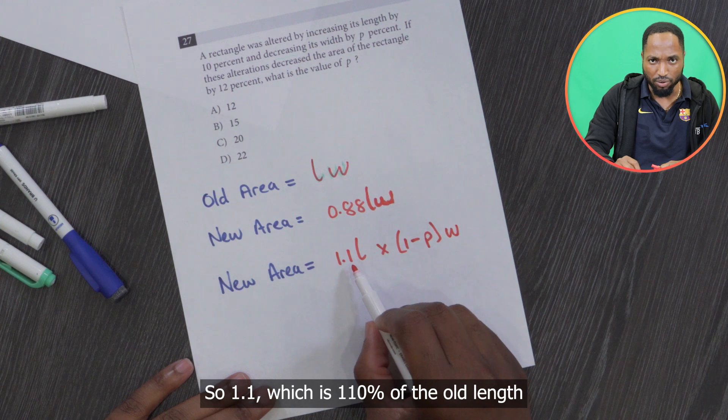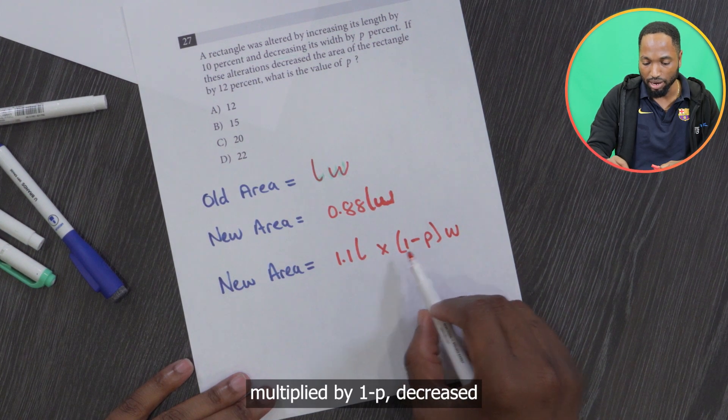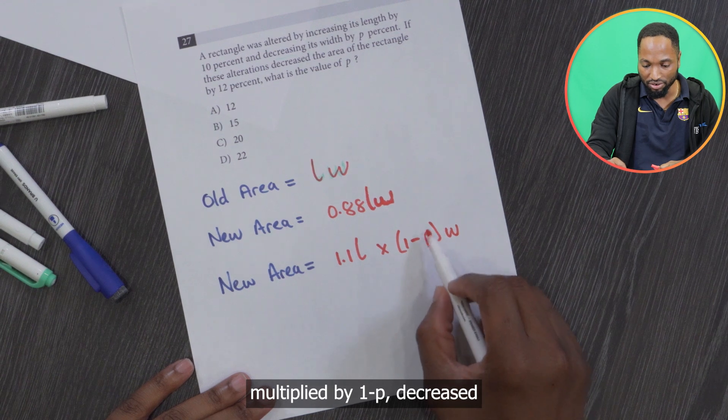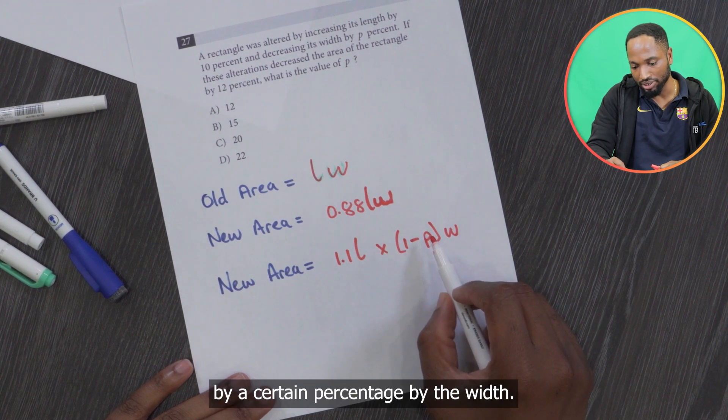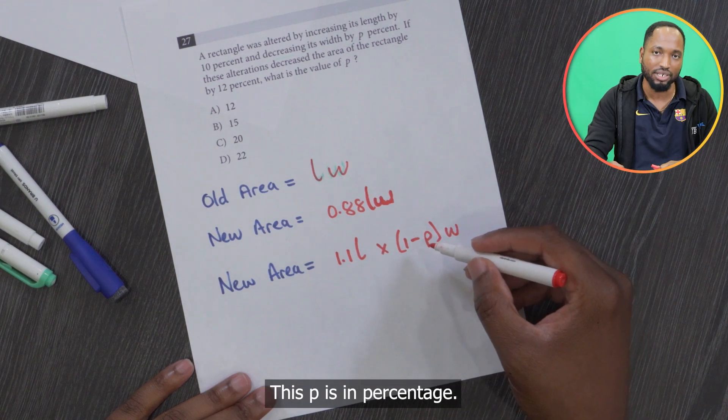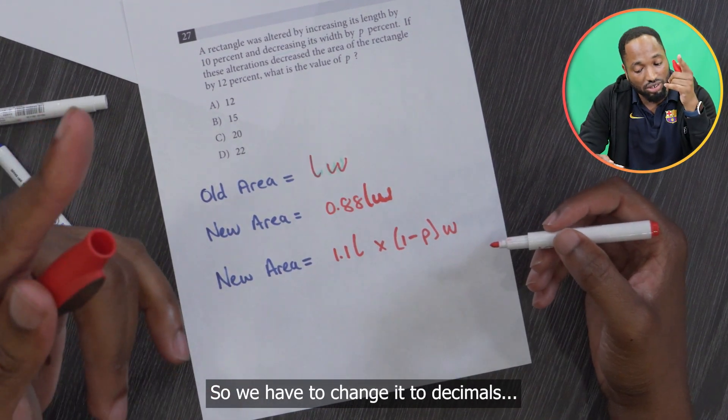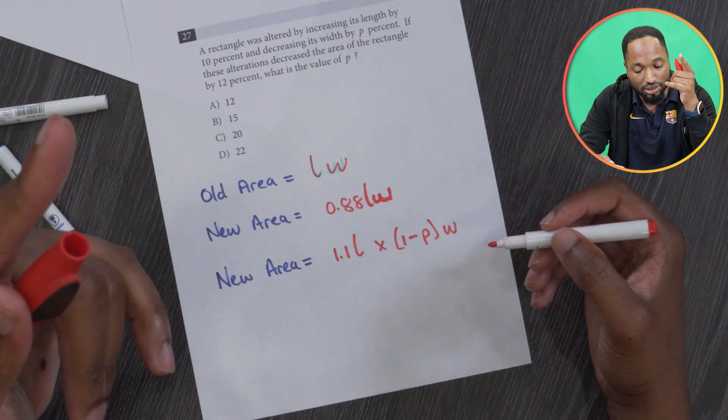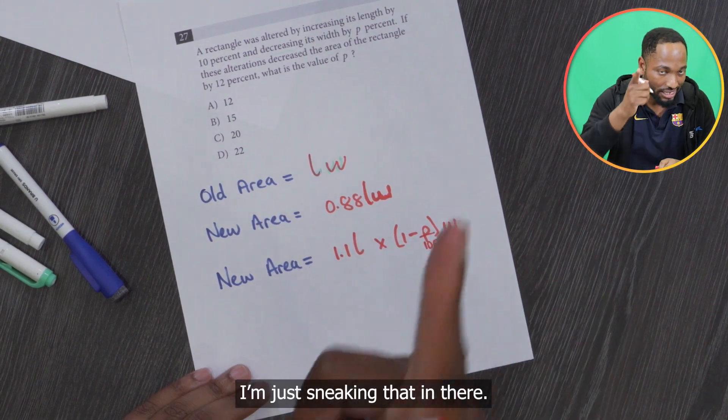So 1.1, which is 110% of the old length multiplied by 1 minus P, decreased by a certain percentage by the width. But there's a problem with this P. This P is in percentage, so we have to change it to decimals over 100. I'm just sneaking that in there.